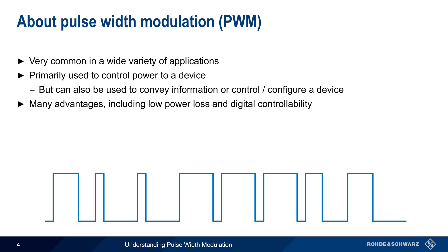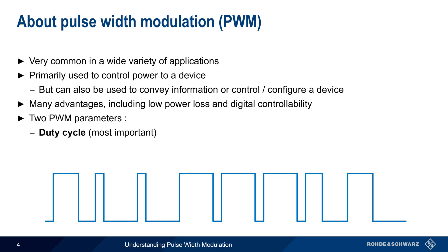Pulse width modulation is relatively straightforward, with two main parameters: the duty cycle, which is by far the most important, and the switching frequency. Let's look at each one of these in a little bit more detail.